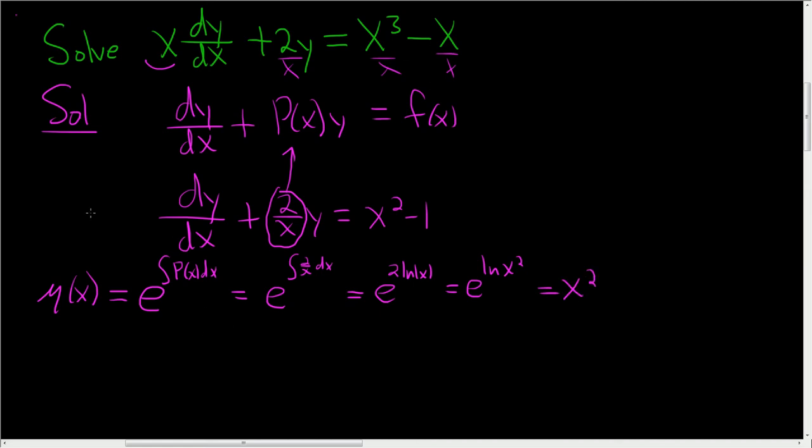All right, the next step is to multiply this equation, not the first one, by x squared. So we have x squared dy/dx plus x squared times 2 over x. So that'll be just 2x because we lose a copy of x.